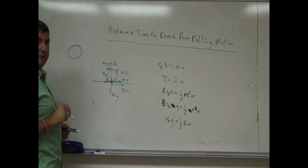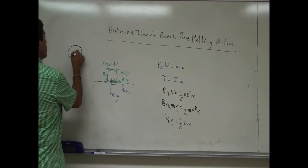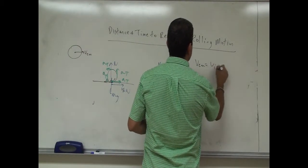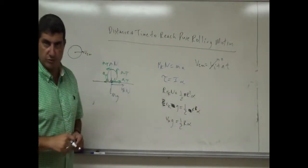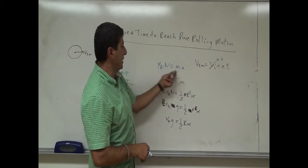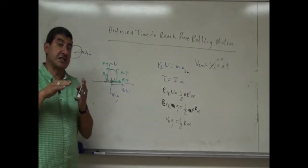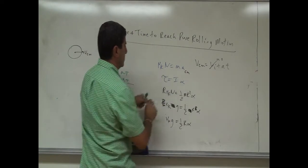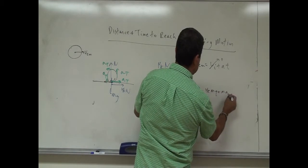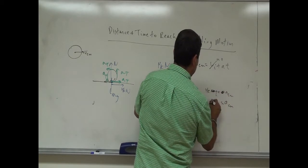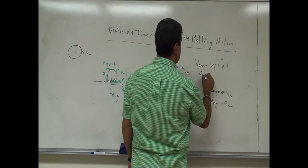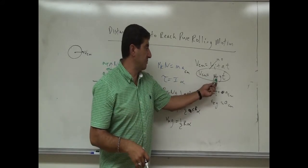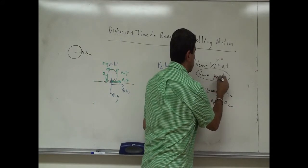Initially when you drop the object to the ground, VCM is zero — the center of mass is not moving. Eventually the center of mass velocity picks up over time. We can say VCM = V_initial + a·t, and since V_initial is zero, VCM = ACM·t. Solving from μk·N = m·ACM with N = mg, the m's cancel and ACM = μk·g. So VCM = μk·g·t.